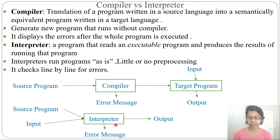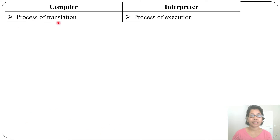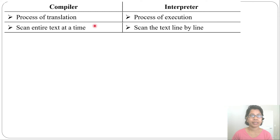Let's see the differences between compiler and interpreter. First, a compiler is a process of translation — it translates the source program into a target program. An interpreter is a process of execution — it executes and gives output directly. Second, a compiler scans the entire source code at a time, but an interpreter scans the source code line by line.